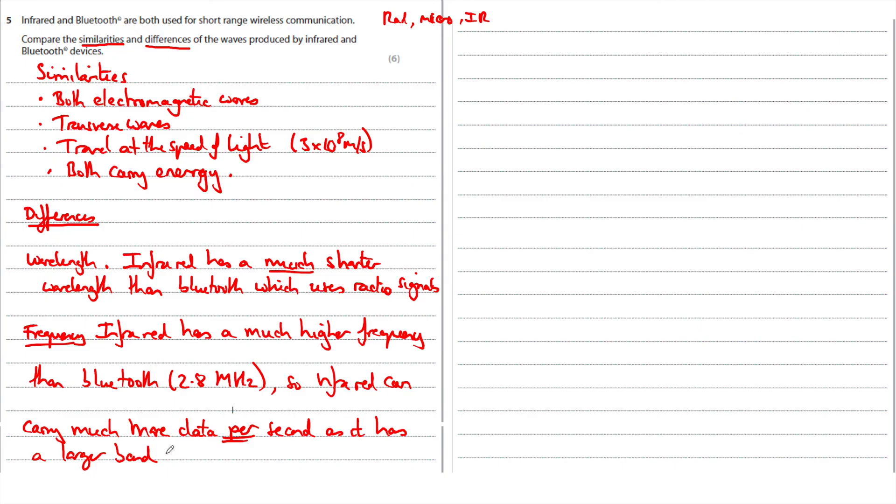The next property to consider is line of sight. So infrared will get absorbed by walls but Bluetooth will travel through walls so it doesn't need line of sight. Line of sight. Infrared cannot travel through walls so it needs line of sight. Bluetooth can travel through walls.